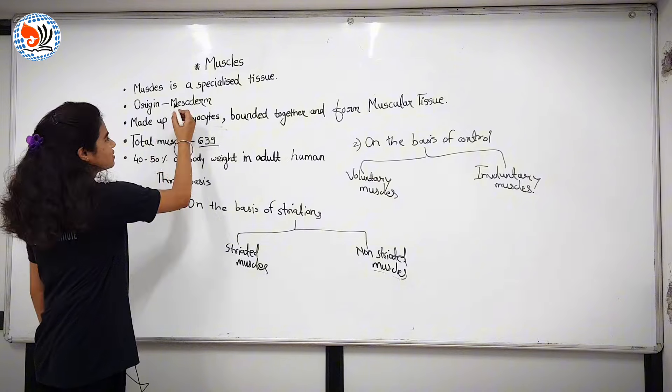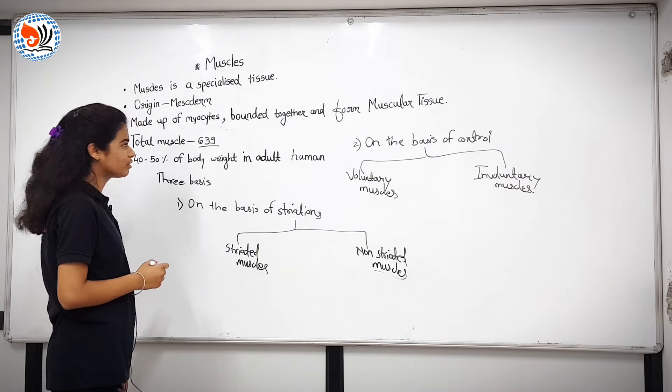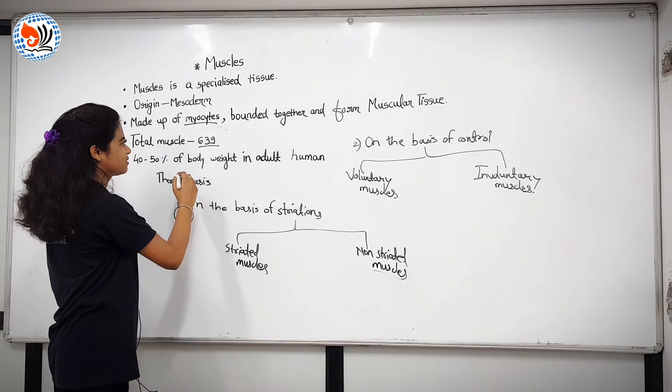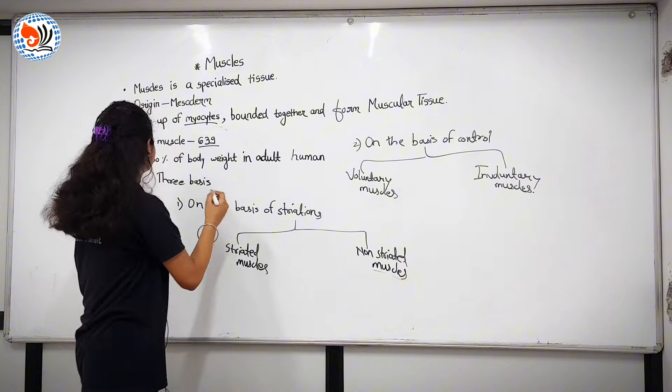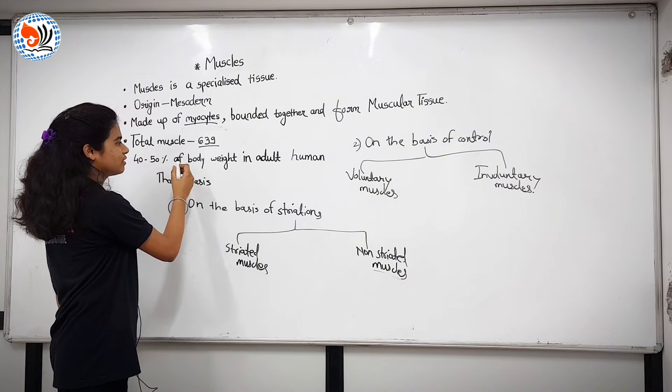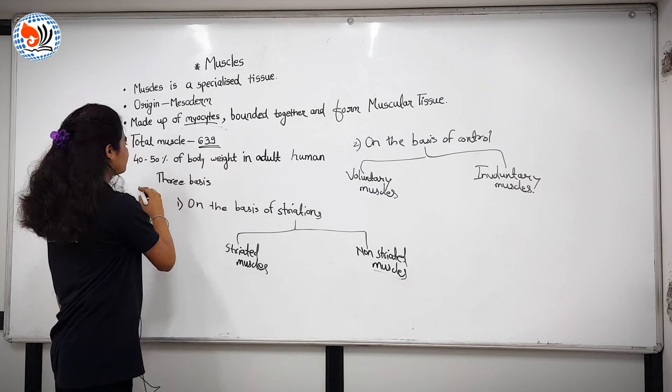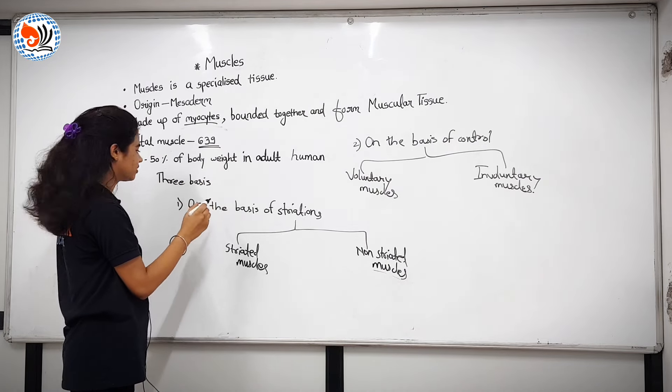First, muscular muscles. Muscle is a specialised tissue. Muscles belong to mesodermal origin. They are called myocytes. Myocytes are nothing but the muscle cells. They bound together to form muscular tissue. Total muscles in an adult human body is 639, and they comprise 40-50% of total body weight in adult human.